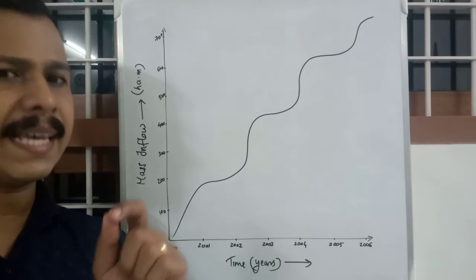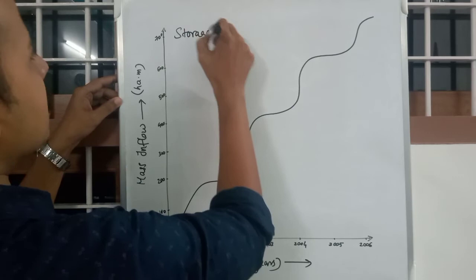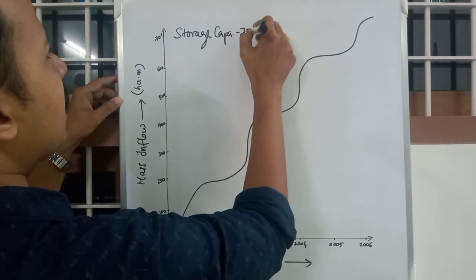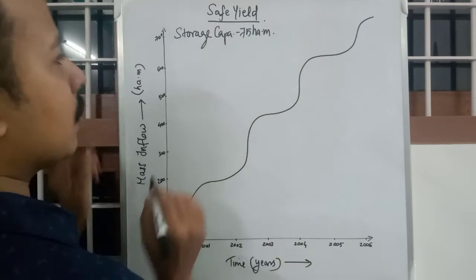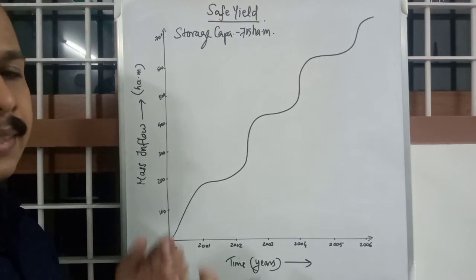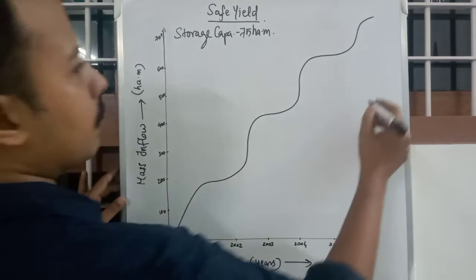Next: calculation of safe yield using storage capacity and the mass inflow curve. We have the storage capacity just calculated as 75 hectare meters. Safe yield is the minimum guaranteed quantity that can be drawn from a reservoir on a yearly basis. Step one: you have the mass curve.